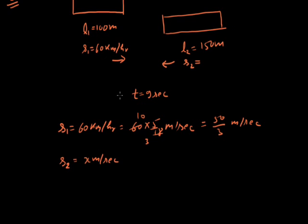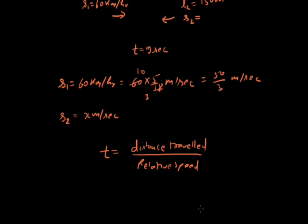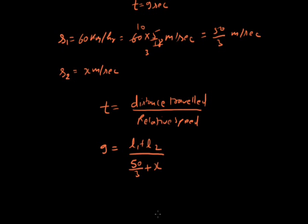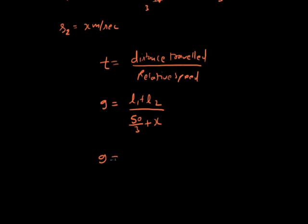The trains cross each other in 9 seconds. Time equals distance traveled divided by relative speed. Distance traveled is the sum of the length of the two trains, L1 plus L2. Since both trains are moving in opposite direction, their speeds add. So 9 equals L1 plus L2 divided by 50 by 3 plus x. Putting values: 9 equals 100 plus 150, that is 250, divided by 50 by 3 plus x.